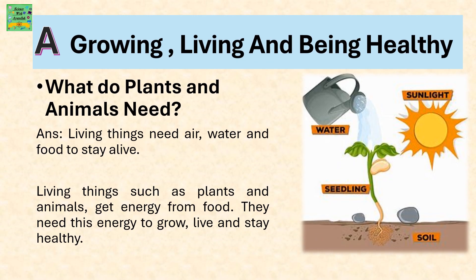Part A: Growing, Living and Being Healthy. What do plants and animals need? Living things need air, water and food to survive. Living things such as plants and animals get energy from food. They need this energy to grow, live and stay healthy.